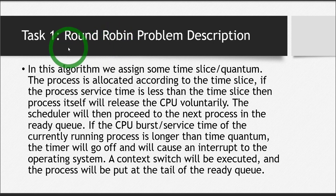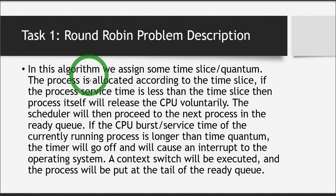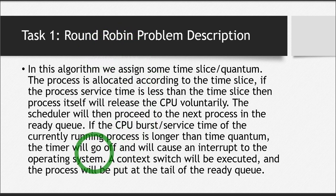If their work is done within two minutes, it's well and good. If not, they have to go back in the line and wait for their turn. Every student uses the machine for two minutes, then goes back in the queue. When their turn comes again, they are allowed to use the machine for another two minutes.